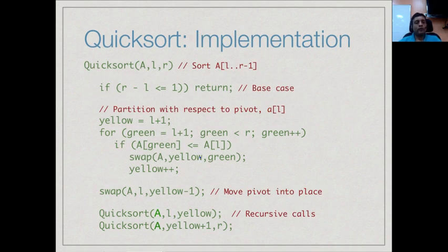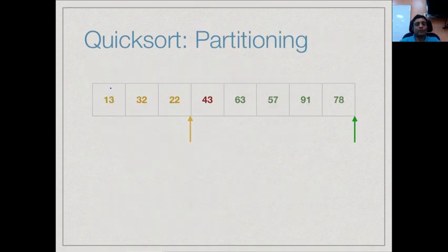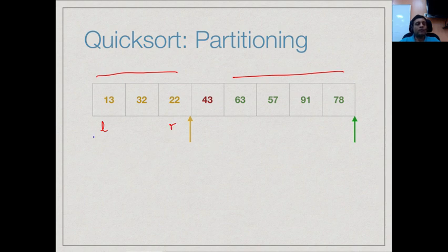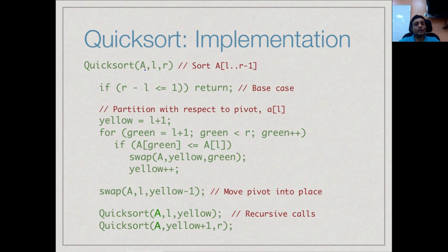This is how we do Quicksort in general. After partitioning we call Quicksort on the left segment and Quicksort on the right segment. So it is useful for each call to specify the range being sorted. In general Quicksort takes the array and two pointers and sorts from index l to r minus 1. Using the terminology from the example, yellow indicates the yellow pointer position and green indicates the green pointer position, and these two variables track the positions of the two arrows. We start to the right of the pivot.